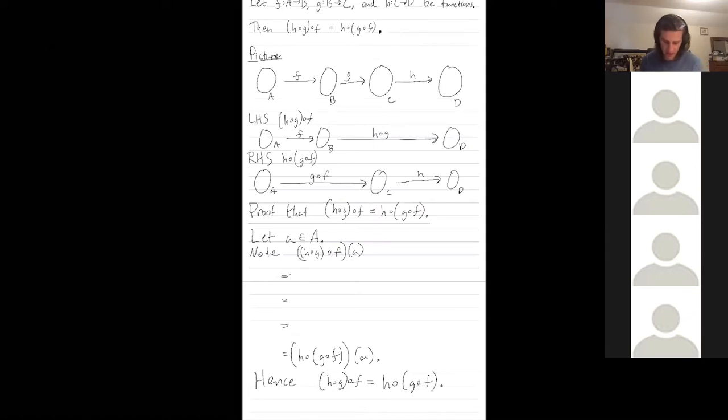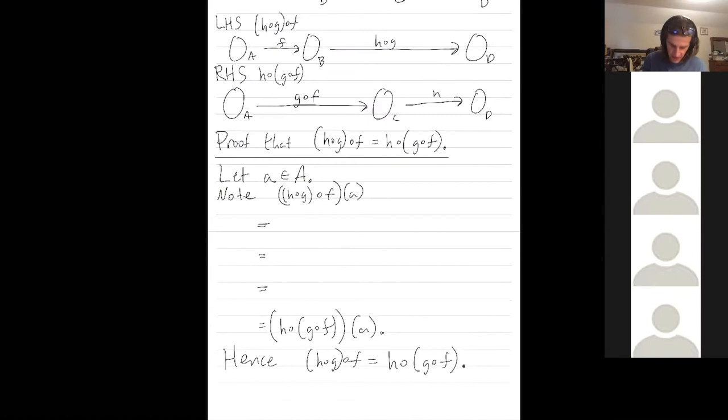So let's do the algebra. This is h composed with g applied to f of a, which is h applied to g of f of a. And now what is g of f of a? g of f of a is g composed with f applied to a.